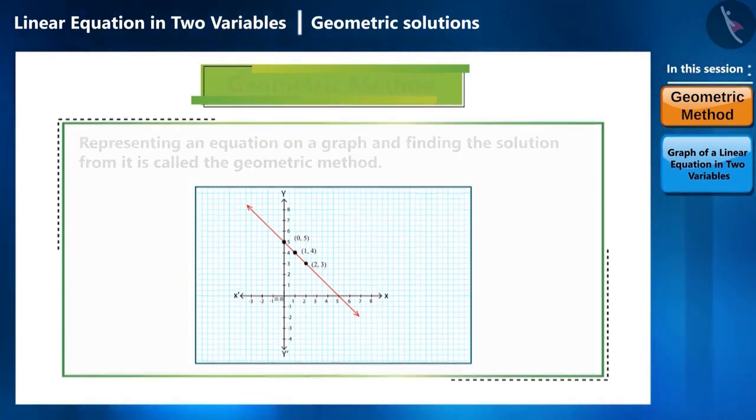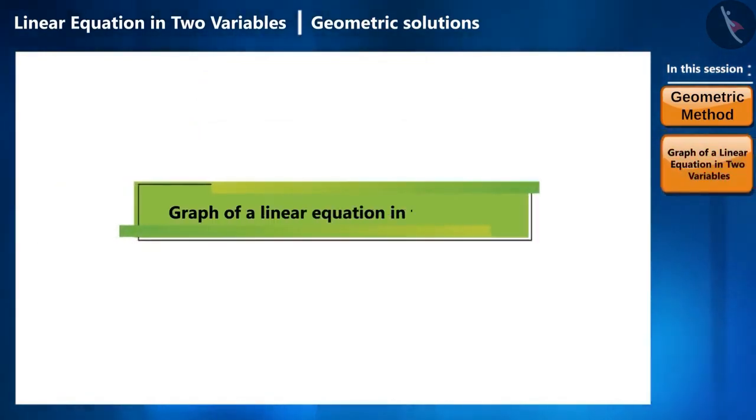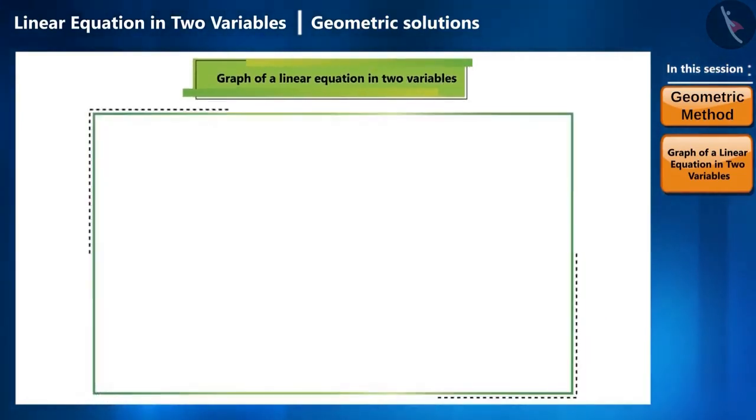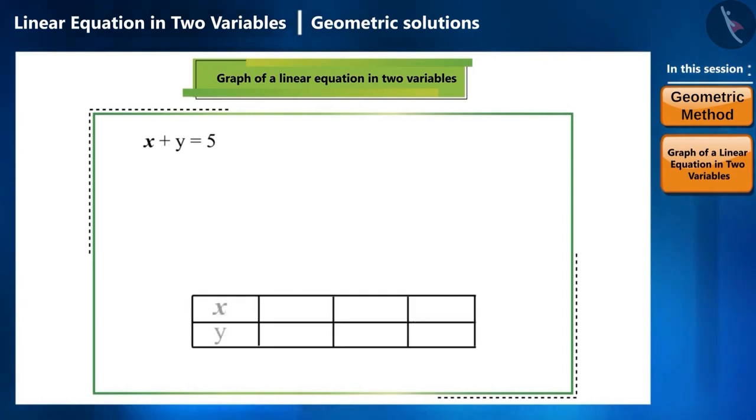So let us see how to construct the graph of a linear equation in two variables. First, let us take a linear equation with two variables such as x plus y is equal to 5. Now we will create a table like this where we will take different values for x and y.